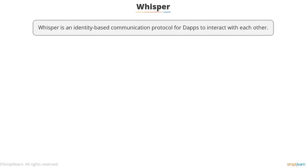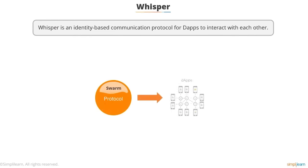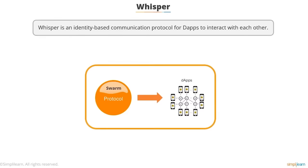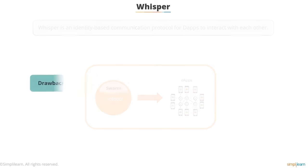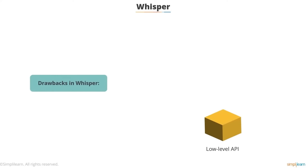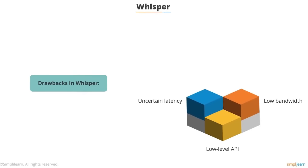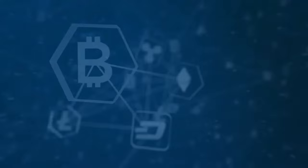Whisper is an identity-based communication protocol for DApps to interact with each other. DApps that need to publish small amounts of information to each other and have the publication last for a substantial amount of time prefer using Whisper. For instance, a DApp running a currency exchange may use Whisper to record an offer to buy a currency at a pre-agreed price. Drawbacks of Whisper: low-level API only exposed to DApps, low bandwidth not designed for large data transfers, uncertain latency, and no reliable methods for tracing packets.